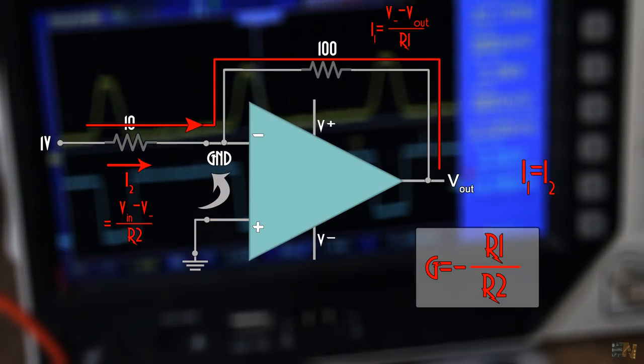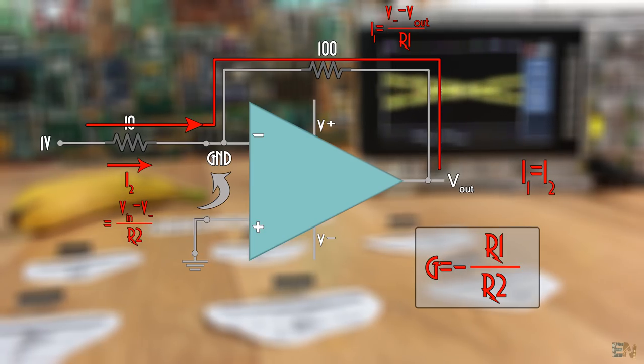R1 is 100 and R2 is 10, so the gain is minus 10 in this case. So if we apply 1V at the input, we get negative 10V at the output and vice versa.